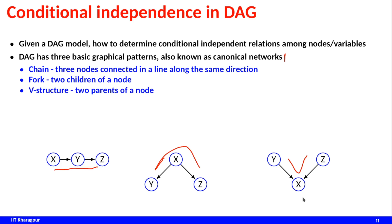In the chain structure, Z is dependent on Y and Y is dependent on X, but Z is conditionally independent of X given Y — if I know whether Y has happened or not, I am not bothered about X. In the fork structure, Y and Z are actually independent given that I know X. In the V-structure, X is governed by both Y and Z, but Y and Z are actually independent of each other.